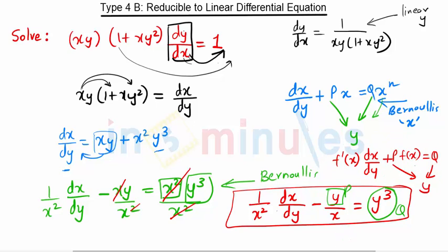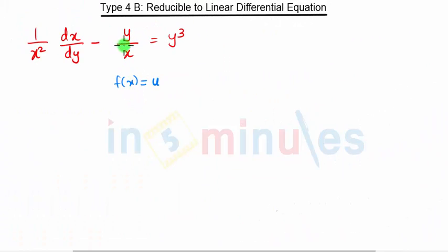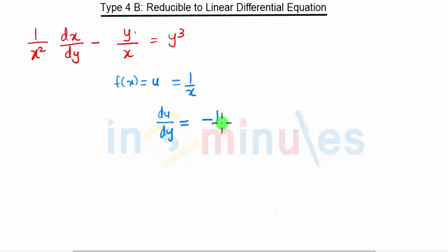Whenever our equation is in this type, we substitute f(x) = u. In this case, our f(x) is 1/x, so we substitute u = 1/x. Taking the derivative, du/dy = −(1/x²)·(dx/dy).